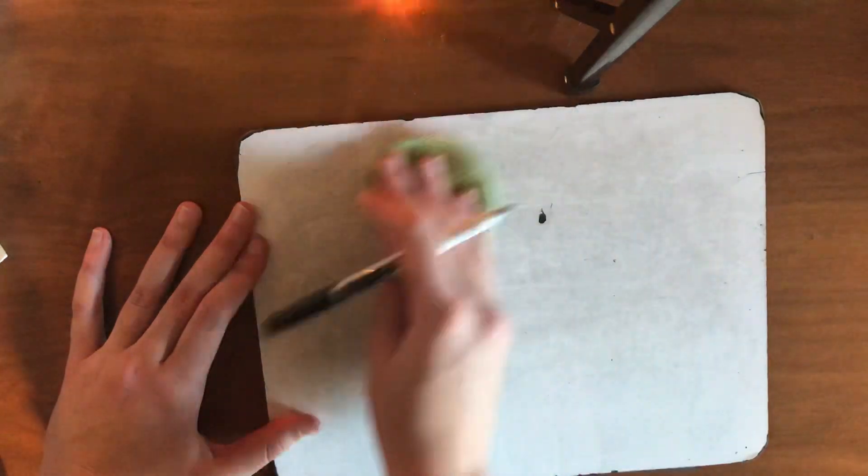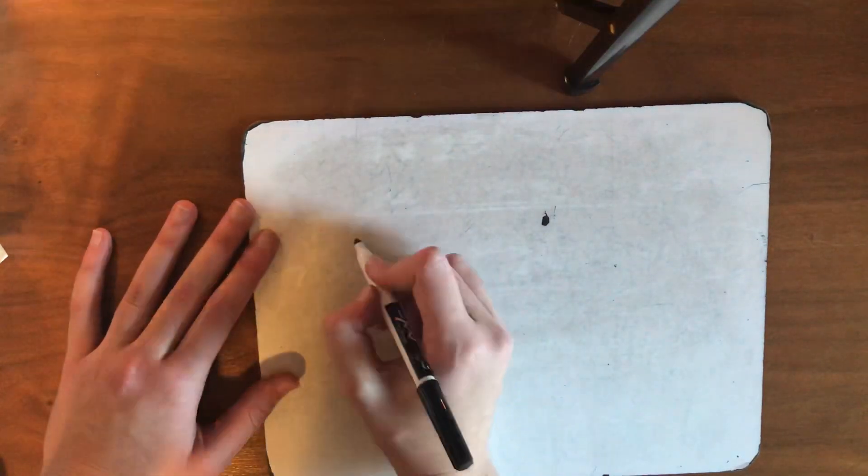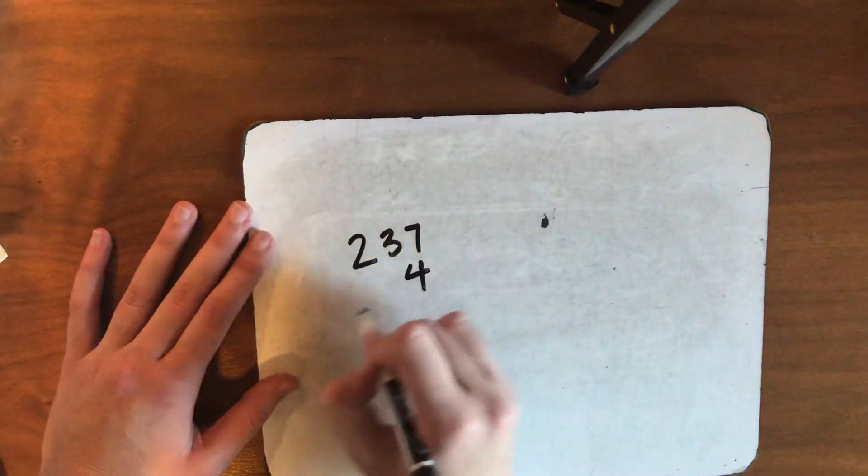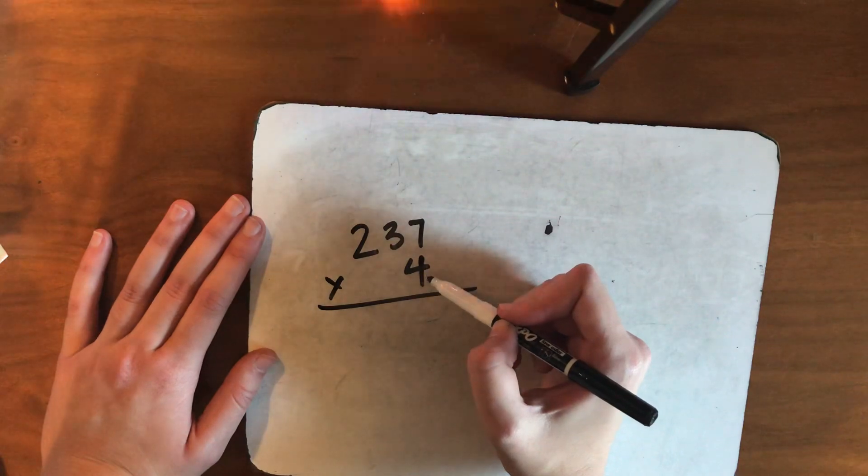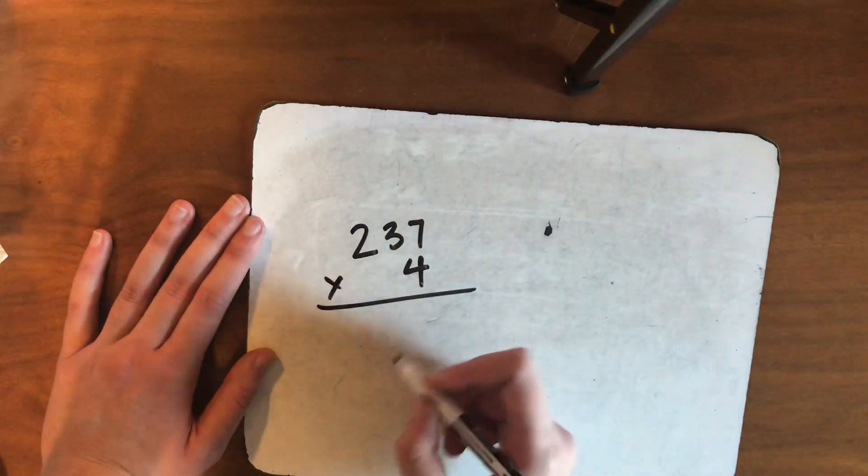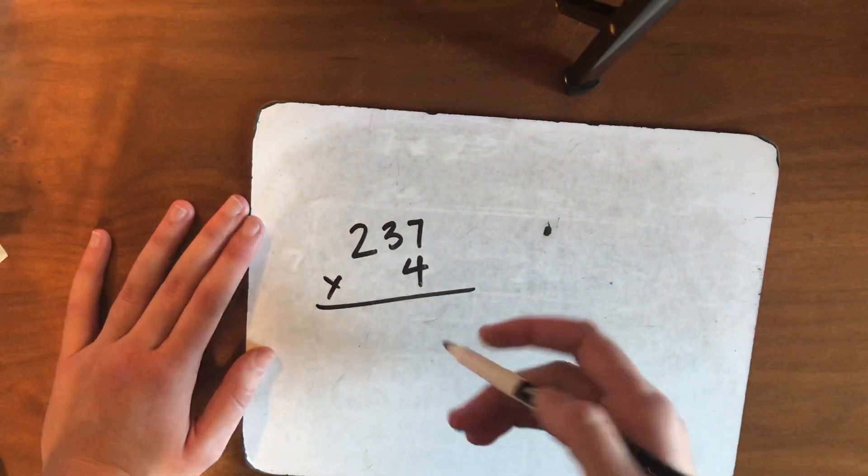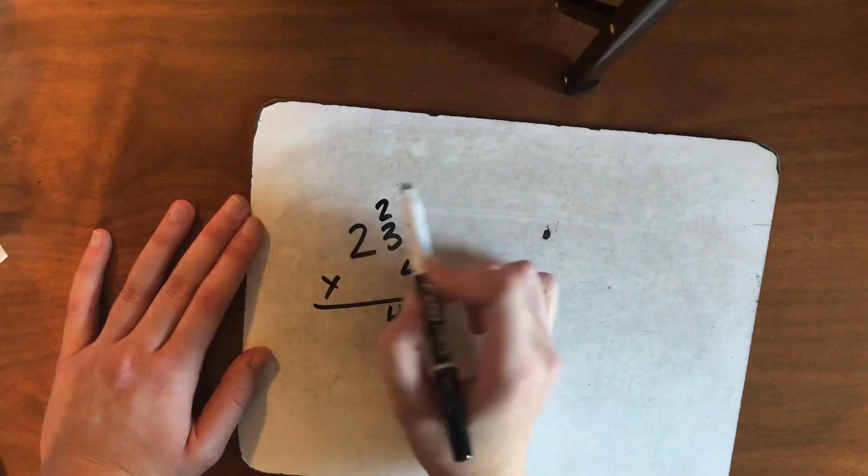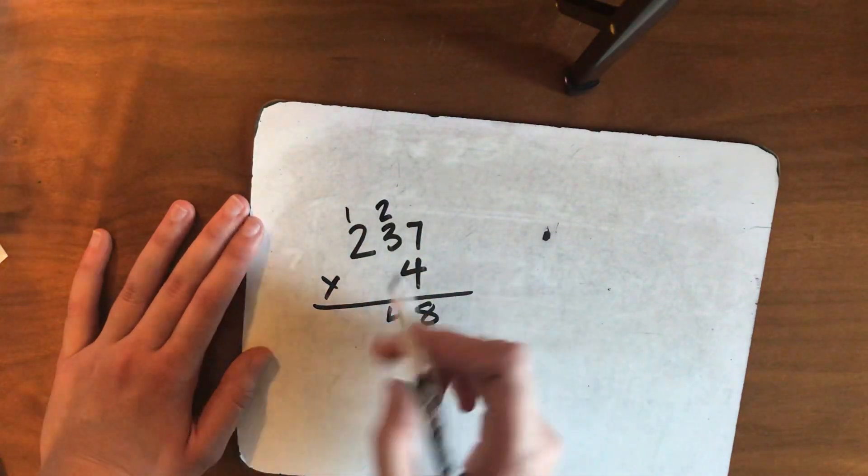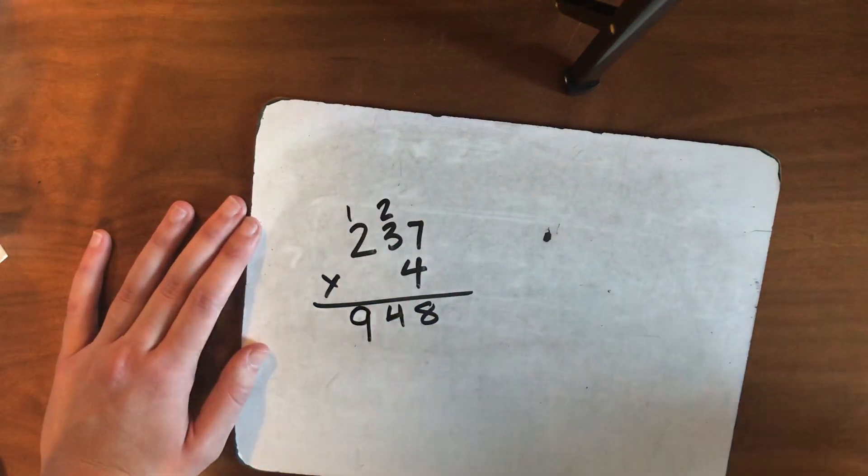Now, I can also do it this way. Can you show me how to do, just do it the classic way that we talked about last year? Try it on your Nearpod board and then I'll check your work with you. All right, to check, 4 times 7, 28. Carry my 2. 4 times 3, 12. Plus 2 is 14. Carry the 1. 4 times 2, 8. Plus 1 is 9. 948.